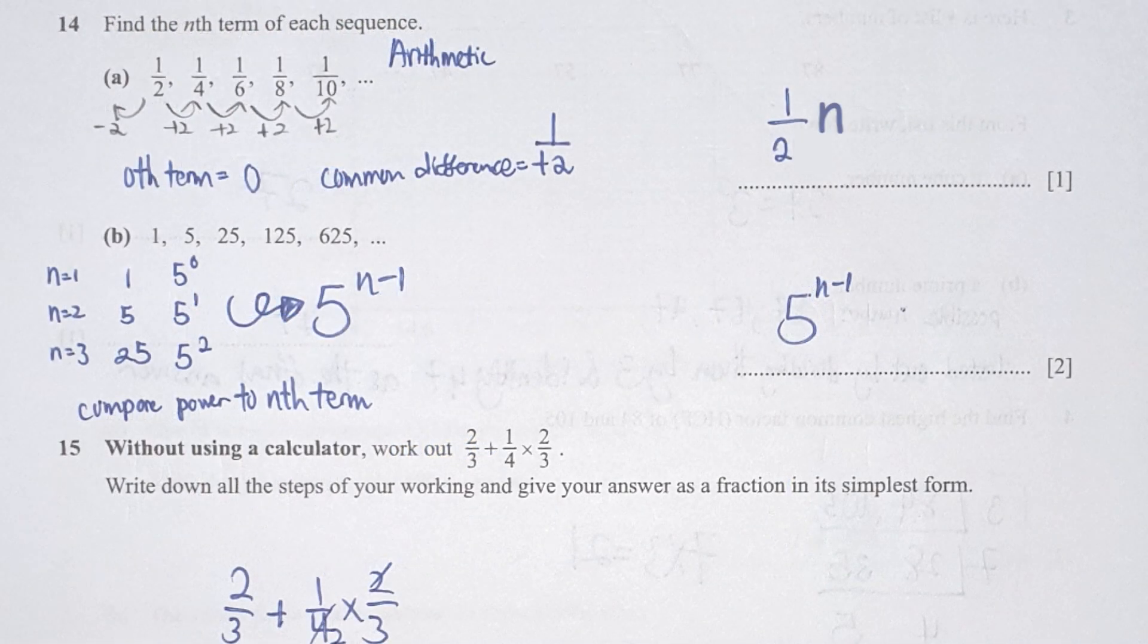For question 14, this one is actually an arithmetic sequence because the difference in the denominator section is the same, which is plus 2 for every term. The zero term here is 1 over 2 minus 2, which is 0. Combine your common difference with n, add in or minus your zero term, and you should get your result as 1 over 2n.